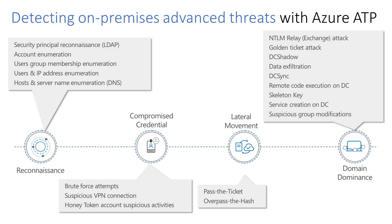Moving to the next link in the kill chain, under compromise credential, a brute force attack is a common way to compromise credentials. This is when an attacker is trying to authenticate with multiple passwords on different accounts until a correct password is found, or by using one password in a large-scale password spray that works for at least one account. Once found, the attacker logs in using that authenticated account. Azure ATP can detect this when it notices multiple authentication failures using Kerberos, NTLM, or the use of a password spray.